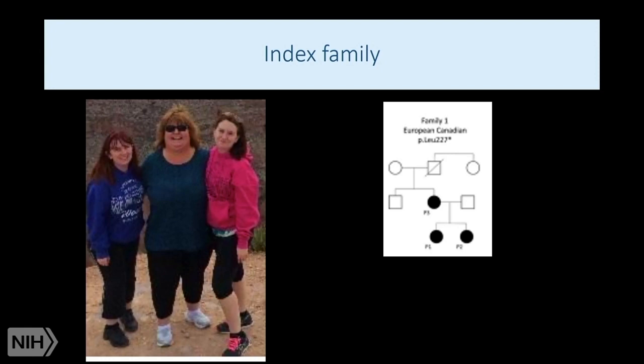Her arthritis was reasonably easy to control, but not her uveitis. A few years later, her sister was born, and at a year of age developed widespread polyarthritis and quite significant uveitis, difficult to control. As a result, I did what I often do with patients I have great difficulty managing — I contacted my friends at the NIH. This was before the autoinflammatory disease program was up and running, so they went to the ocular program where Dr. Nussenblatt worked up both patients but came up with treatment recommendations, nothing regarding a diagnosis.